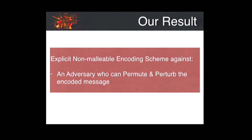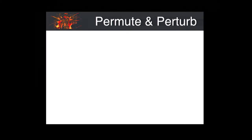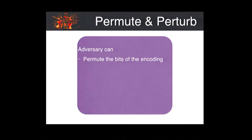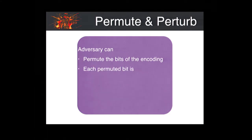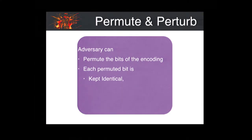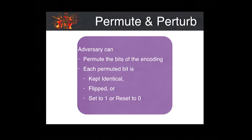Our result constructs an explicit non-malleable code against tampering functions which are allowed to permute and perturb each bit of the encoding. An adversary, when presented with an encoding, can first permute the bits of the encoding. Next, for each permuted bit, it can choose one of four operations: it can either forward the bit, that is keep it identical, flip the bit, set it to one, or reset it to zero.